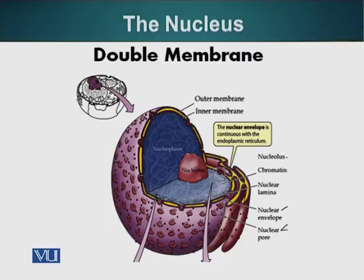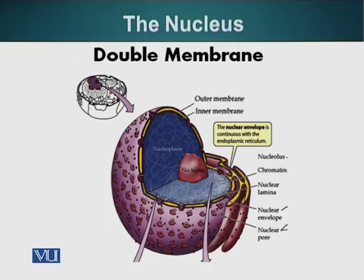Inside the nucleus there is a structural element, a type of skeletal element called the nuclear lamina, which basically maintains a specific shape of the nucleus. Nuclear lamina is very important: it not only maintains the shape of the nucleus, it also protects the DNA from damage. For example, there is a disease called progeria, where there is a mutation in the gene that codes for nuclear lamina. If nuclear lamina is not present, the DNA gets damaged very easily and people suffering from this disease age much more rapidly than normal people.